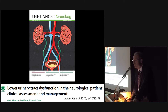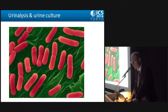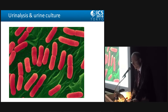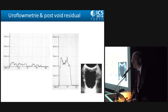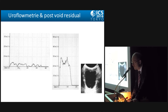This is nicely reviewed in the Lancet Neurology article that you will easily find in PubMed. When examining your patient, please exclude that the patient is suffering from a urinary tract infection — urinalysis and urine culture if appropriate. Also perform uroflowmetry and post-void residual measurement, preferably non-invasively using ultrasound. If ultrasound is not available, you can use a catheter to measure post-void residual, and you can also use the catheter urine for urine culture.